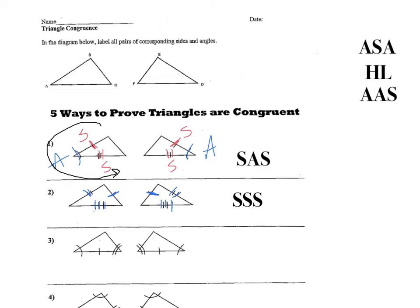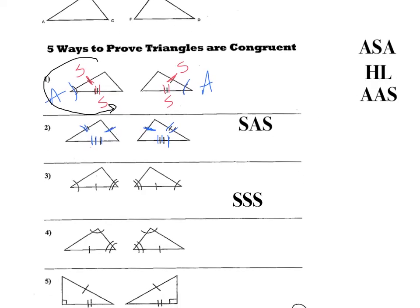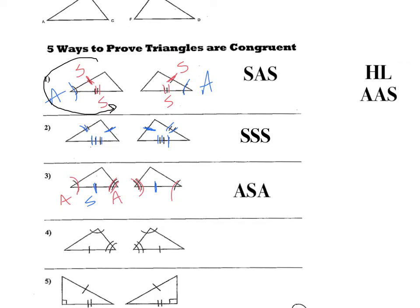For the next one, number three, we have this angle congruent with this angle, this side congruent with this side, and then another angle congruent with another angle. So it goes angle, side, angle in both triangles. We are definitely going to use angle, side, angle.